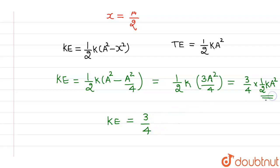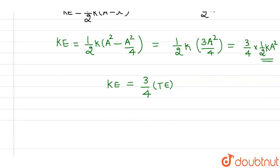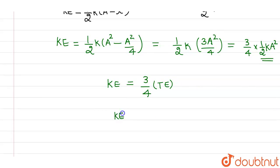Since (1/2)ka² is total energy, this can be written as 3/4 times total energy. So kinetic energy divided by total energy, which is the fraction of kinetic energy to total energy, equals 3/4.